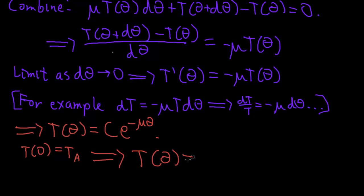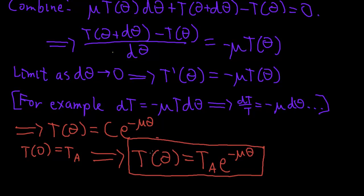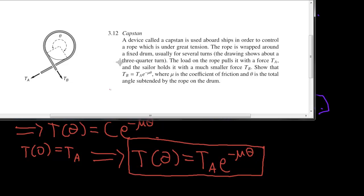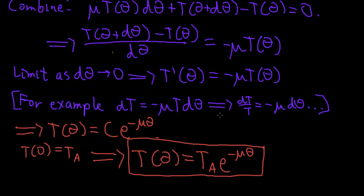This is exactly what we were asked to derive, and it checks against all of our intuitions. As we increase θ — the angle around which the rope is wound — e^(−μθ) gets smaller, so the holding force TB needed is smaller. That makes sense: winding the rope around more means less force needed to hold it. Similarly, if friction increases, less holding force is needed. And if θ equals zero, there's no cylinder at all — just a straight rope — and the force needed to hold on is exactly the load force. This matches what Kleppner and Kolenkow told us to show, so we've solved the problem.